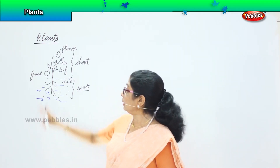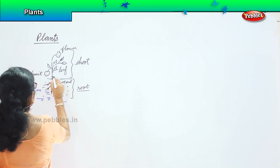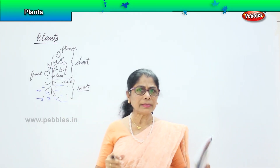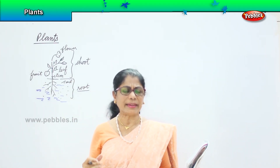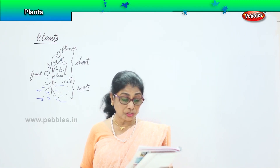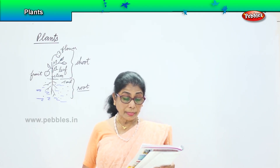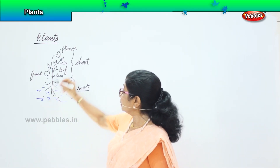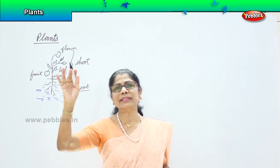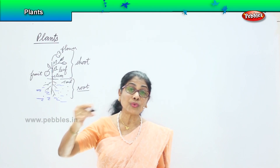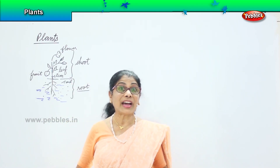Now let's talk about the stem. The stem holds the plant straight and supports the plant, making it sturdy. The water and dissolved minerals brought from the root to the stem are then sent to other parts like the leaves, branches, flowers, and fruits, etc., for the survival of the plant.